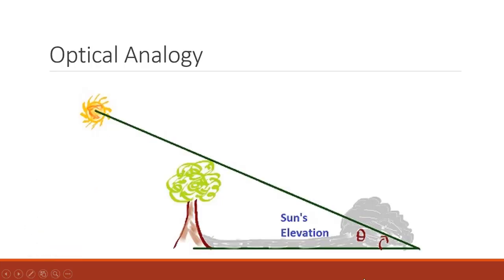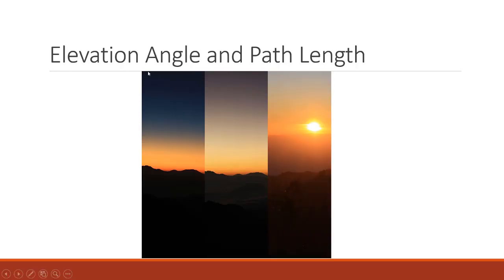We will first see an optical analogy. While observing a location or viewing something from earth, we find that our sight or vision changes with elevation angle, with atmosphere, and with our position. The same is the case with the earth-satellite link. Elevation angle and path length play a very important role in signal transmission. With different elevation angles, the look of the complete picture changes, and similarly, with path length, the signal strength also changes.